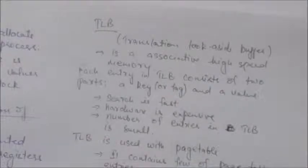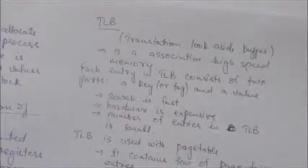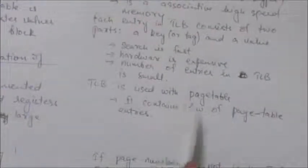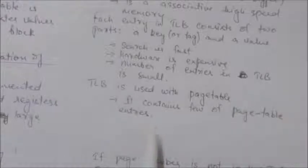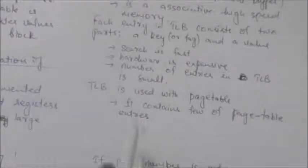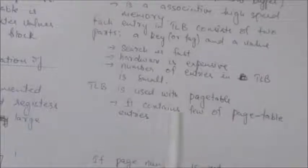TLB contains a few page table entries. When a logical address is generated by the CPU, the page number is presented to the TLB. If that page number is found, then the frame number is immediately available.